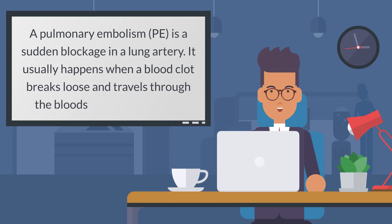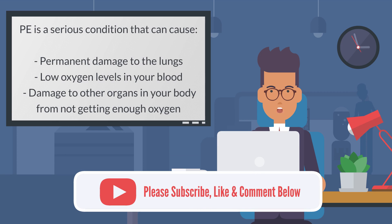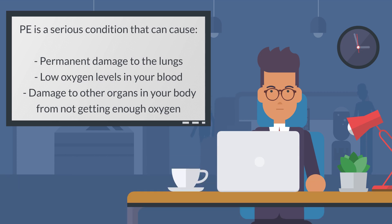A pulmonary embolism (PE) is a sudden blockage in a lung artery. It usually happens when a blood clot breaks loose and travels through the bloodstream to the lungs. PE is a serious condition that can cause permanent damage to the lungs and low oxygen levels in your blood, leading to damage to other organs in your body from not getting enough oxygen.